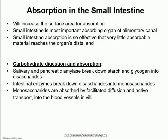Most absorption happens in the small intestine through the microvilli. When all of the enzymes in the microvilli finalize digestion, we're going to start absorbing the monomers — the amino acids, the monosaccharides, and the fatty acids and glycerol. We'll go through them one at a time, walking through the digestion and absorption of carbs, then proteins, then lipids.